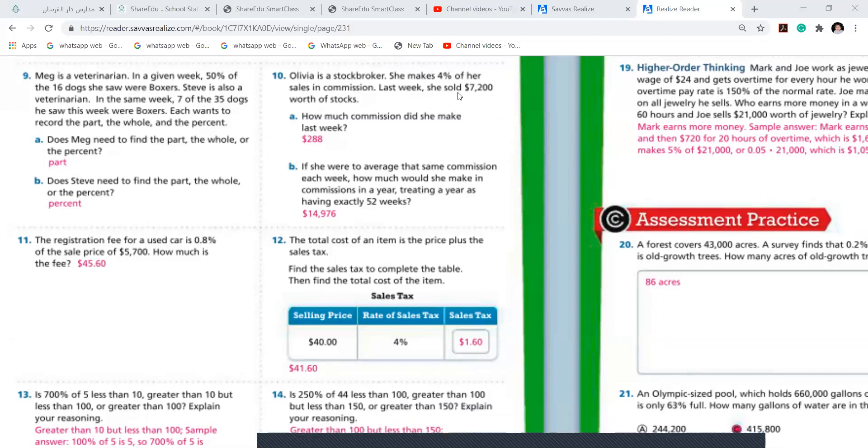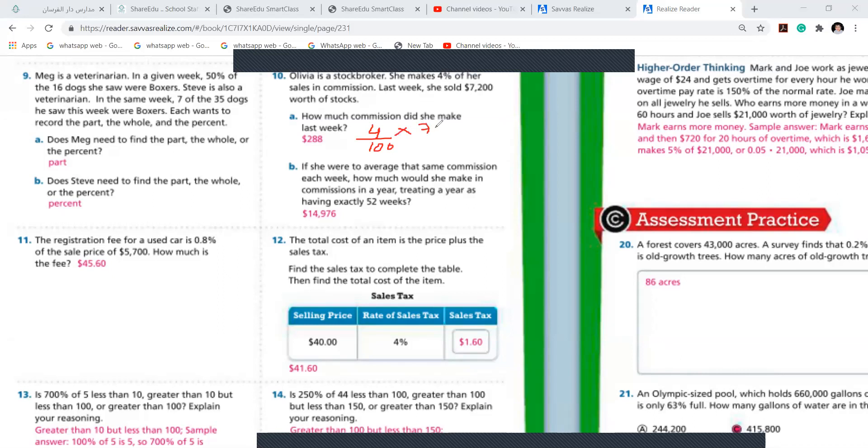4% of 7200: 4 over 100 times 7,200. 72 times 4—yes, you get 288. That's how much you get: $288.